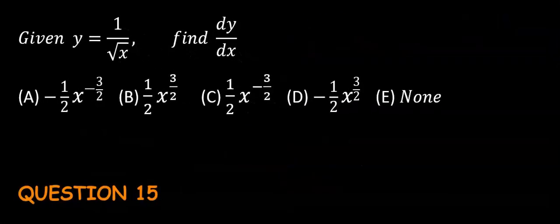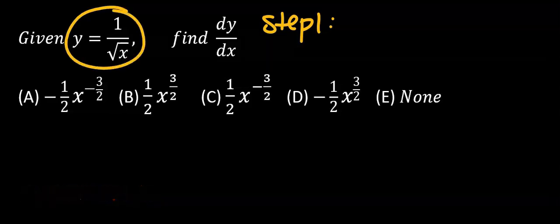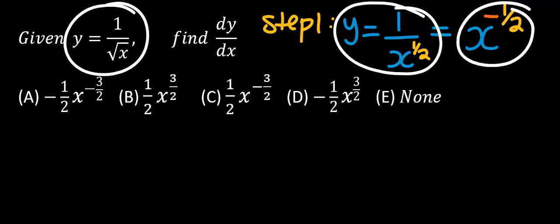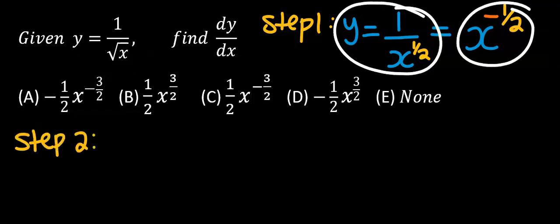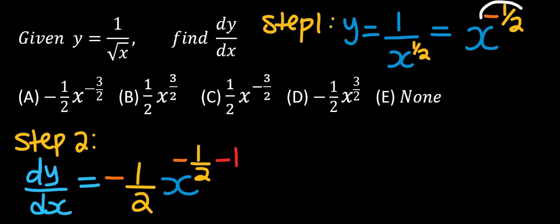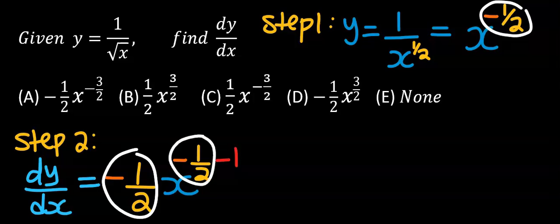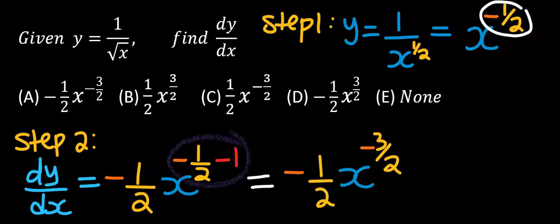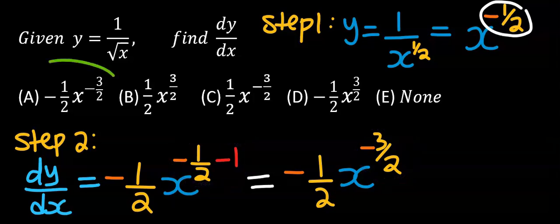Next, consider this question. Step one: rearrange this function — it is the same as 1 over the square root of x, which equals x to the power of minus one-half, according to the law of indices. Step two: differentiate. Only the minus one-over-two at the power makes the movement and equally subtracts one. Minus one-half minus one gives minus three-over-two, and the answer is A.